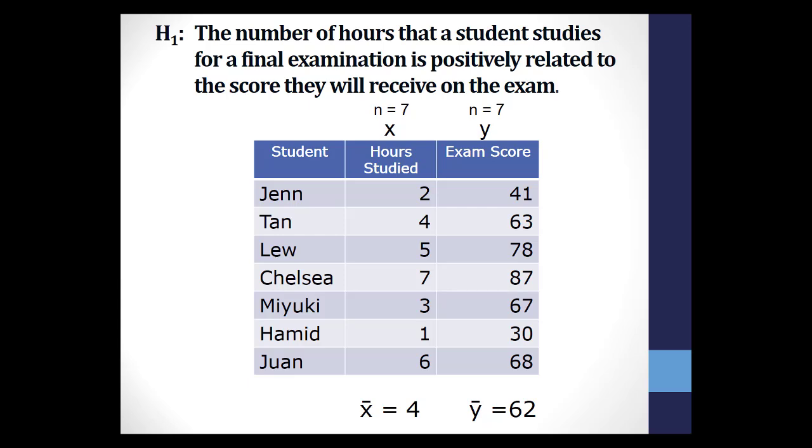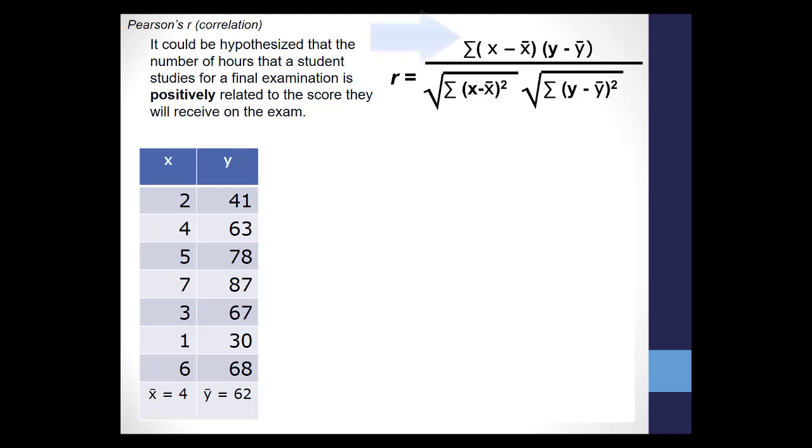So now we have all we need to start doing our calculations. Look at the numerator of the formula. The sum of each score in the group minus the group mean. You do this for the scores on the x variable, number of hours, and the y variable, score on the exam.